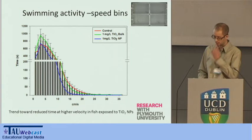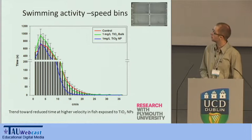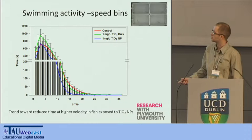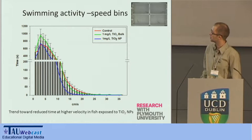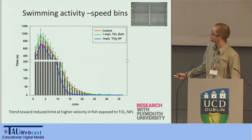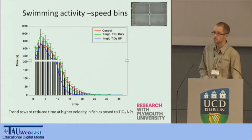When we break this data down and look at the distributions of different activity levels, splitting velocity of movements into one centimeter per second speed bins — with low-velocity movements at one end and high-velocity movements at the other — there is a clear, close-to-significant trend towards reduced time spent moving at high velocities in fish exposed to the nanoparticles compared to control fish and fish exposed to the bulk material. The question really was: if there's a trend within the data but the data itself is quite noisy, what could be driving this?